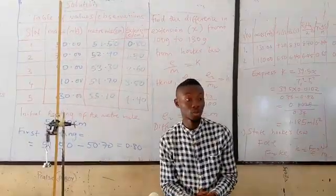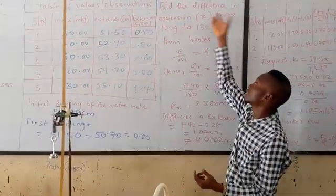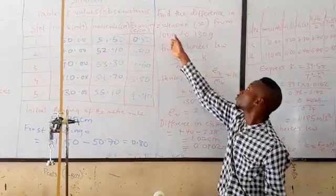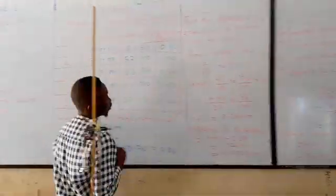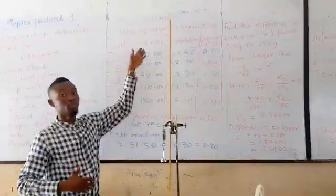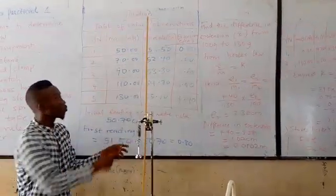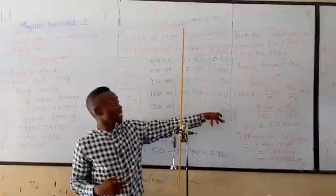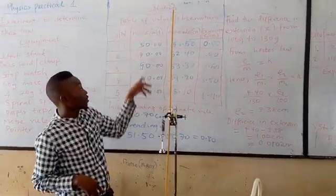Another question I want us to treat is, they say we should find the difference in extension from 100 grams to 130 grams. So if we look from our table here, there is no 100 grams based on what we have measured, but we have 130 grams. At 130 grams, we are recording the extension to be 4.40, but there is no 100 grams here.